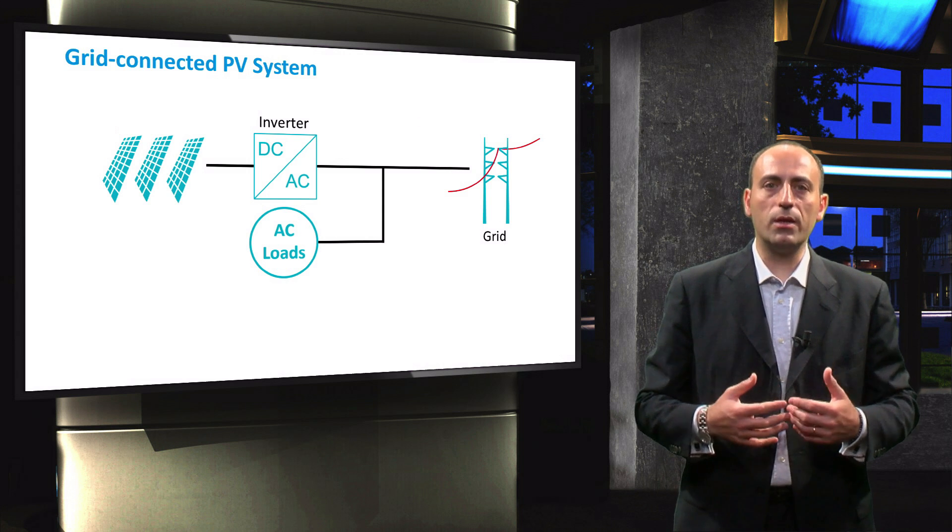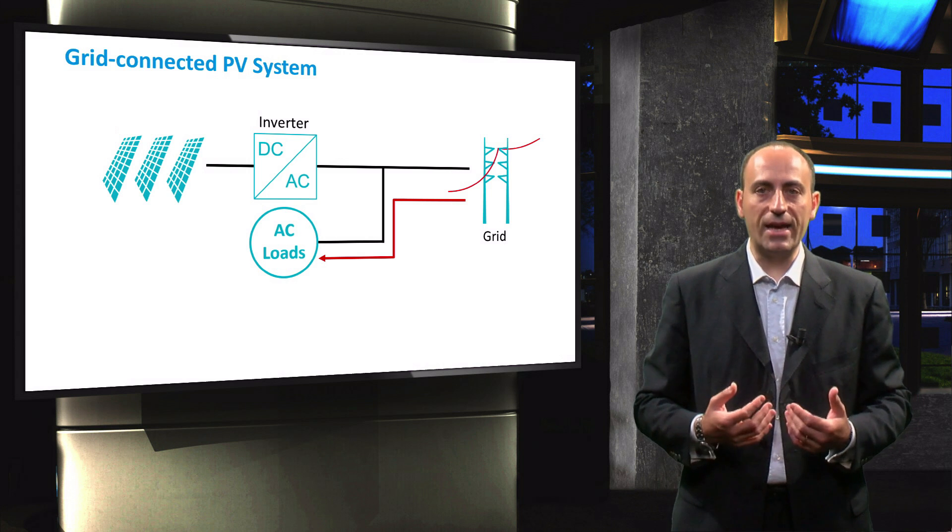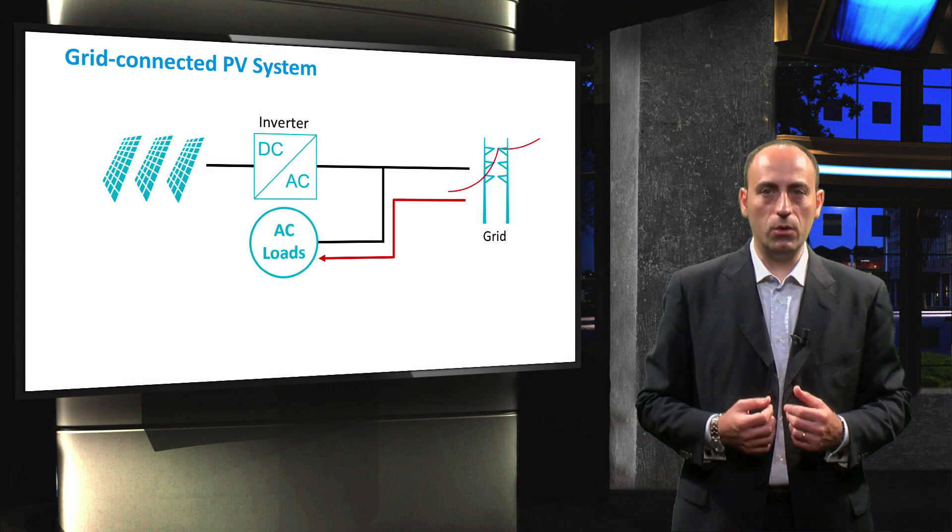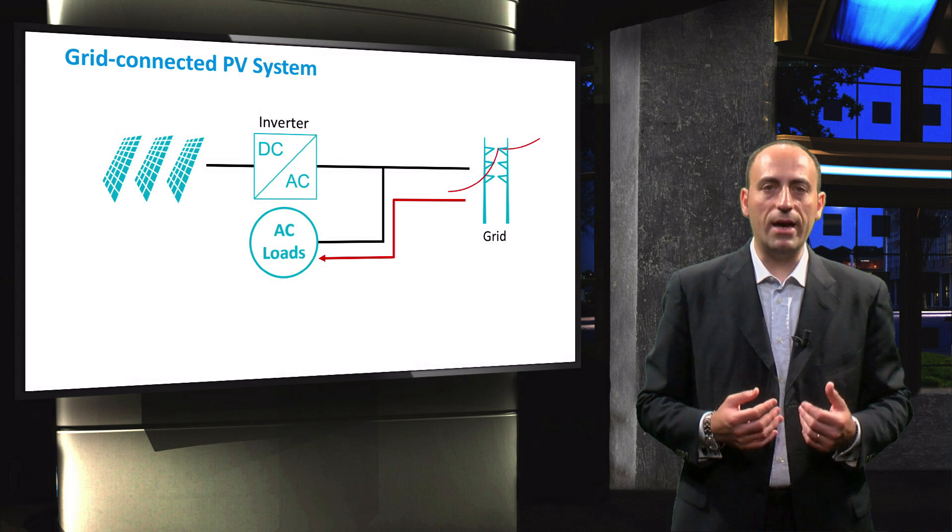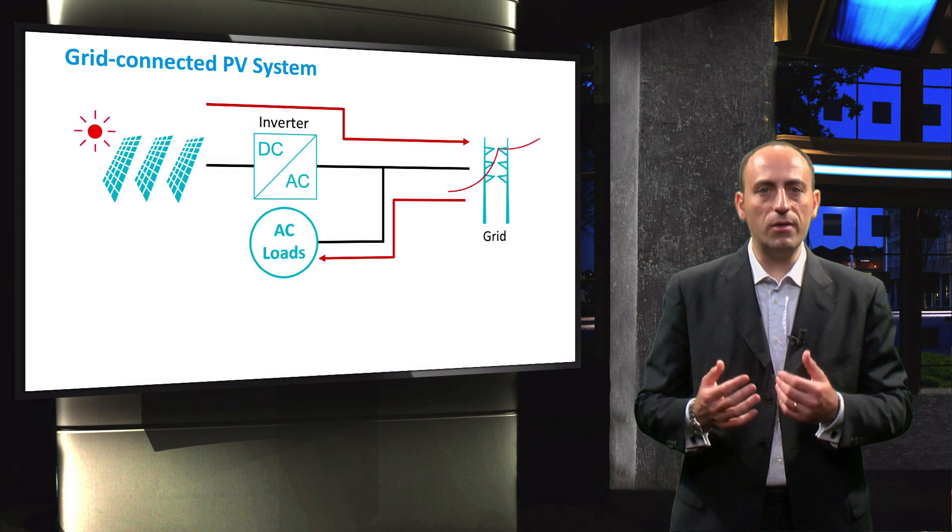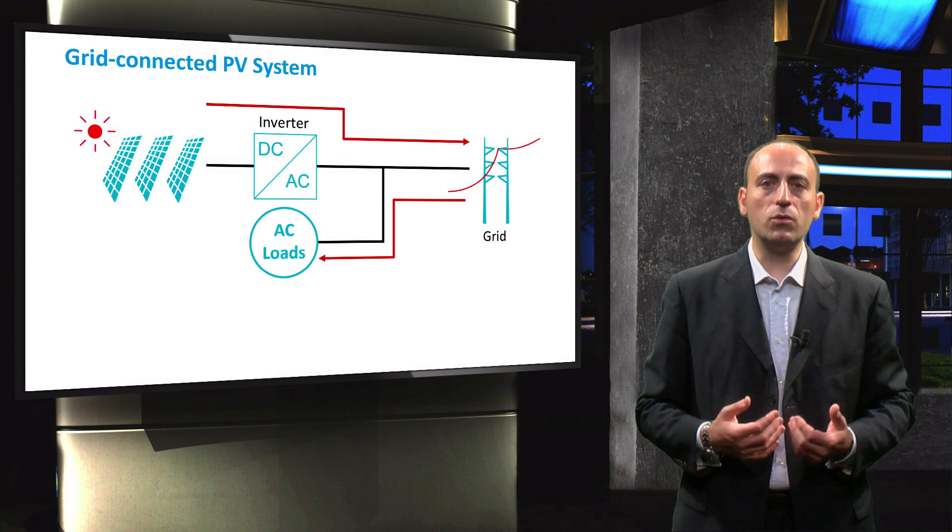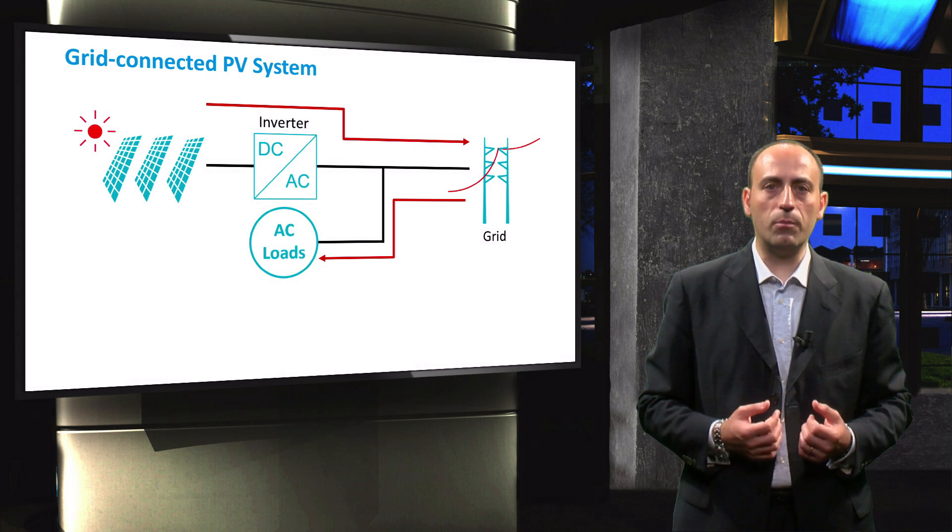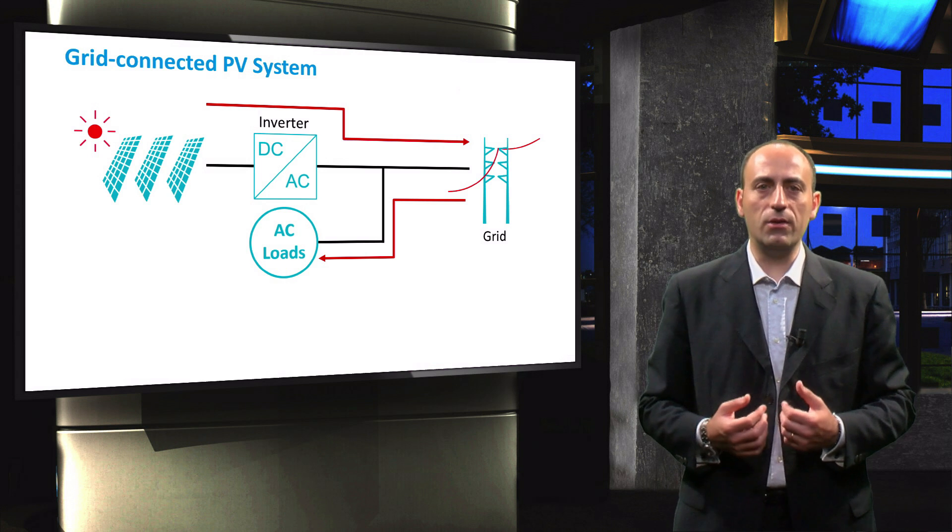For example, during a period of no sun, the modules will be inactive and the grid will power the loads. When the irradiance is high enough, the grid will act as a bidirectional interface.